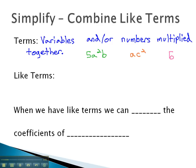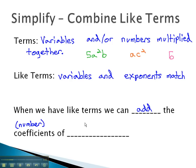When we say we have like terms, what we're saying is that the variables and exponents match. And what's special about when the variables and exponents match is we can combine like terms. When we have like terms, we can add the coefficients, that simply means the number in front of the like terms.